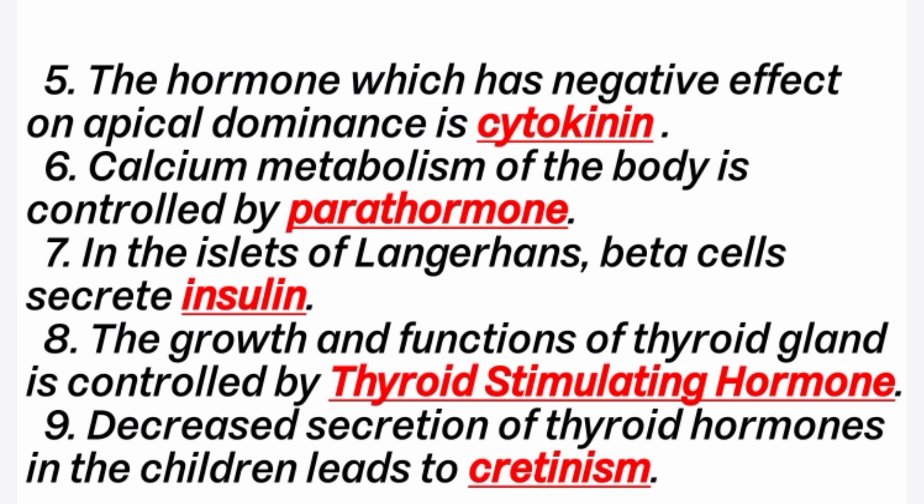6th question: calcium metabolism of the body is controlled by parathormone. Parathormone is secreted by the parathyroid gland. 7th question: in the islets of Langerhans, beta cells secrete insulin. The endocrine portion of the pancreas is called the islets of Langerhans. It consists of two types of cells: alpha cells and beta cells. Alpha cells produce glucagon; beta cells produce insulin hormone, which helps to maintain blood sugar level.